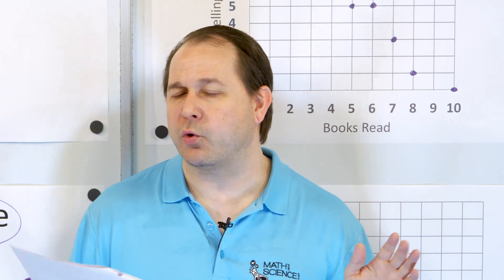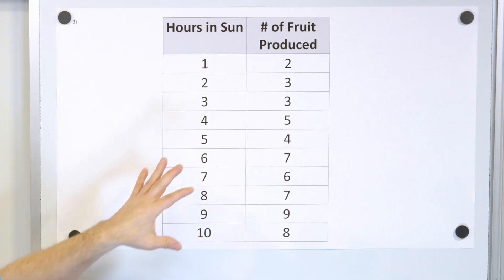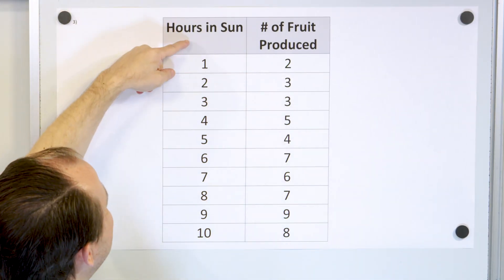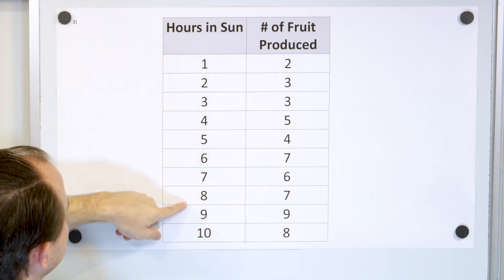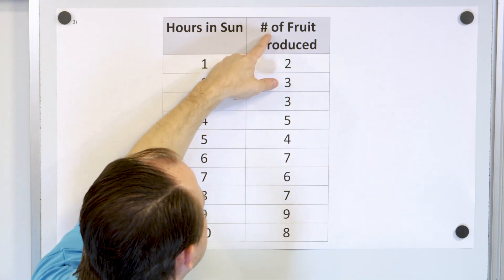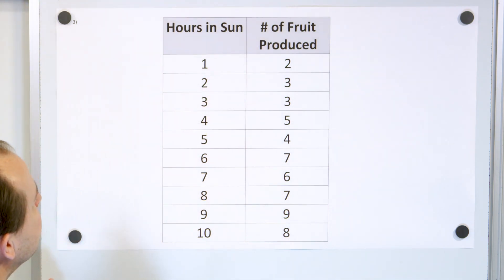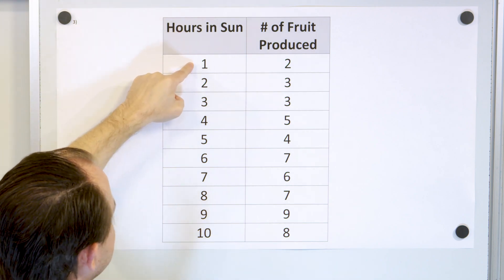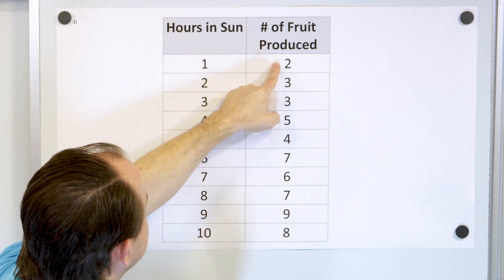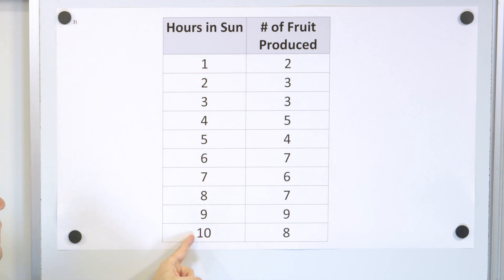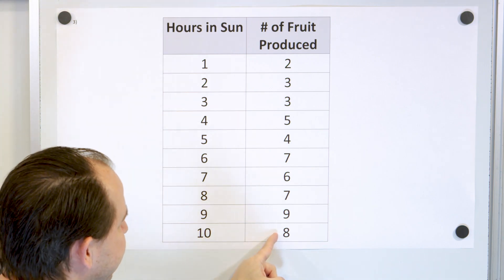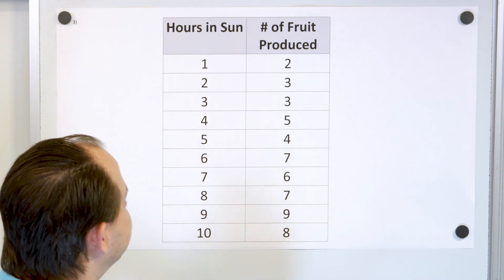Here's our last problem. We have a table of data. The number of hours in the sun for these fruit trees, and the number of fruit produced by these trees. So one hour in the sun on a tree means that two pieces of fruit were produced. Ten hours of sunlight means, in this case for this data, eight pieces of fruit were produced.